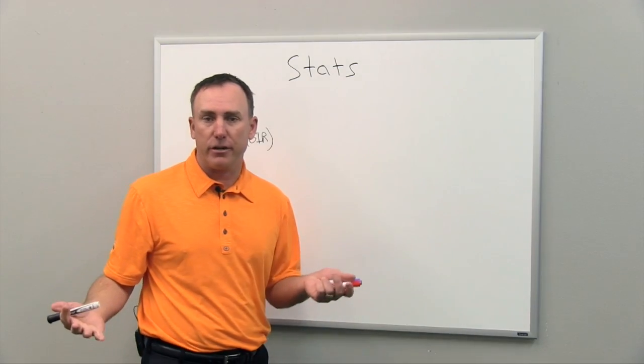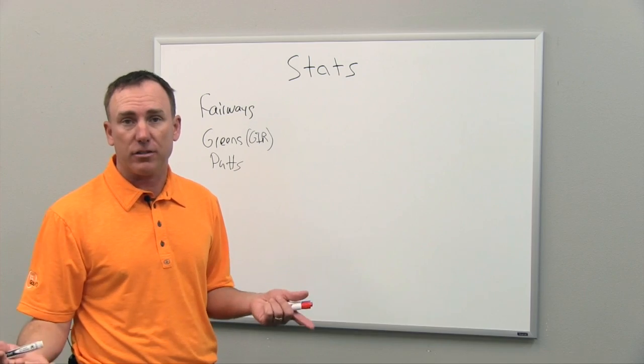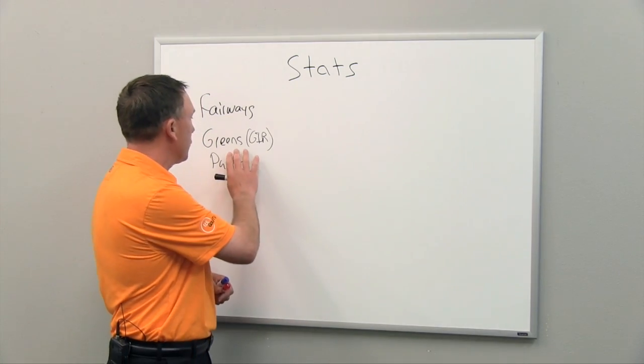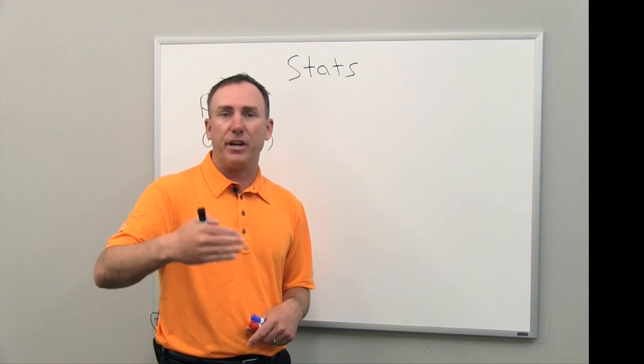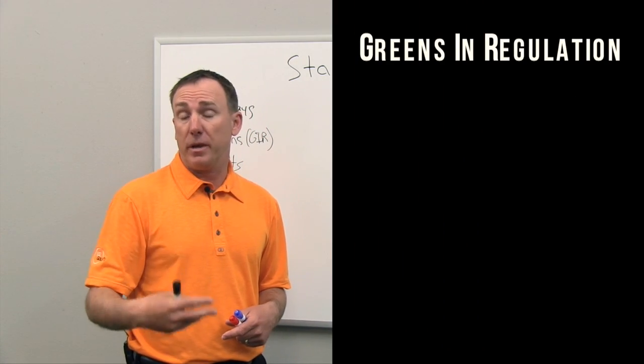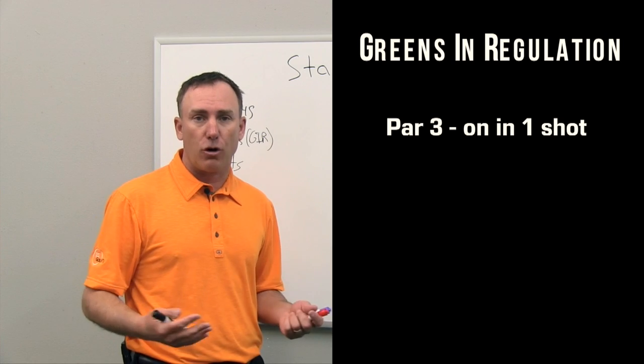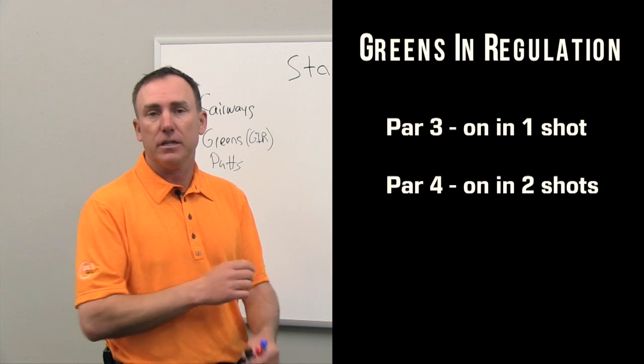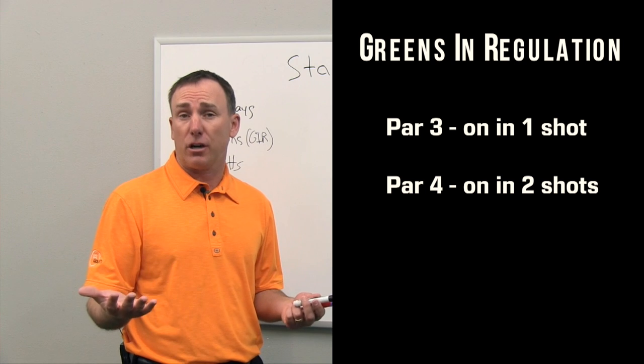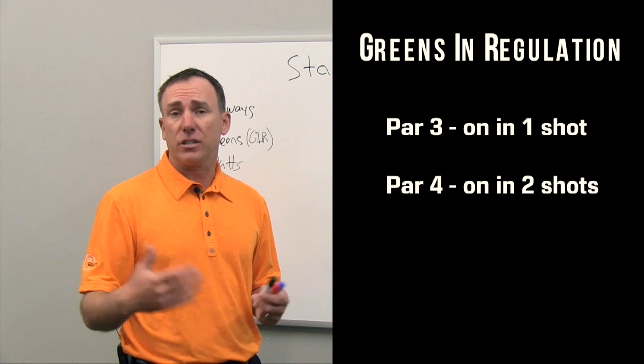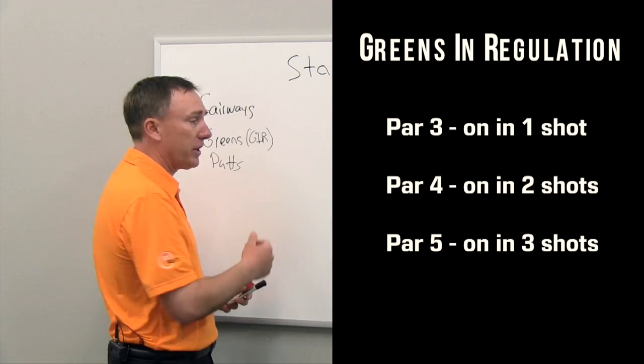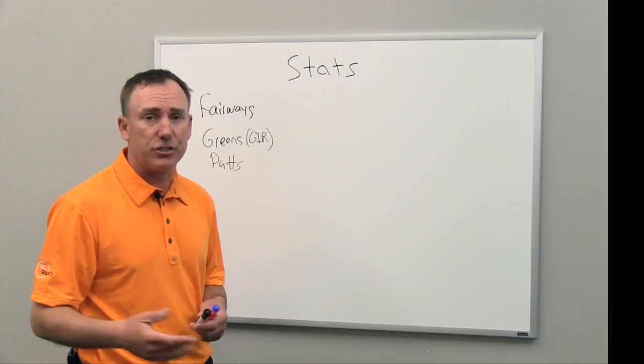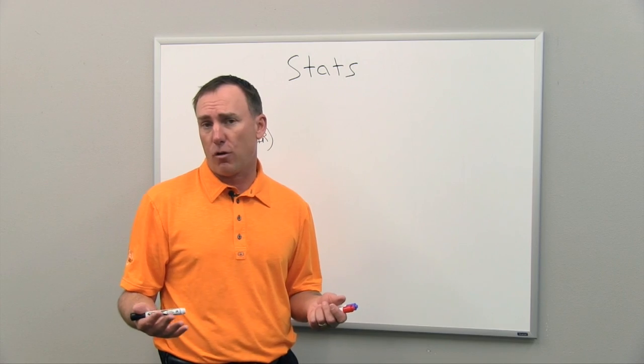So fairways, pretty simple, everybody here knows this, if you hit the ball on the fairway, that counts as a fairway hit. Greens, or greens in regulation, means you got the ball on the green in regulation. So that would be on a par three, that would be one stroke. You get your tee ball on the green, that's a green in regulation. On a par four, that would be two shots, of course, and then on a par five, that would be three shots, and if you did that, that would count as a green in regulation. And then, of course, putts is just your total putts over the course of a round.